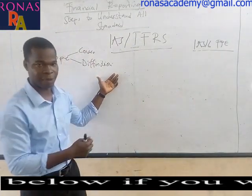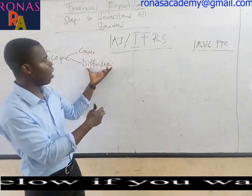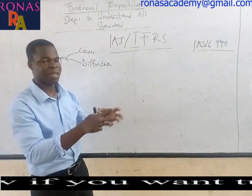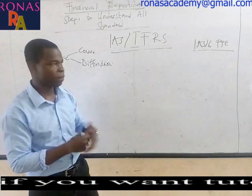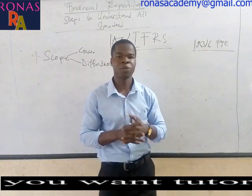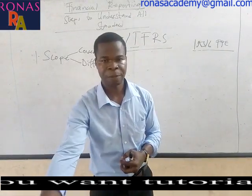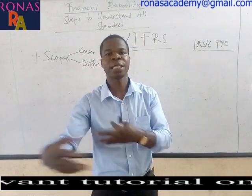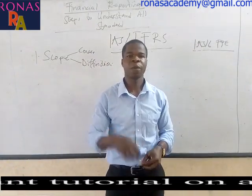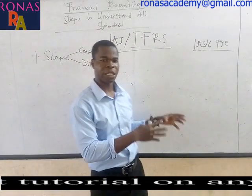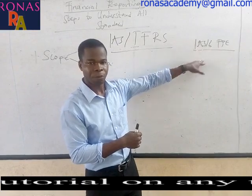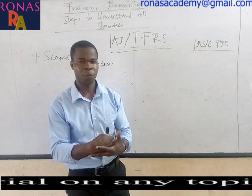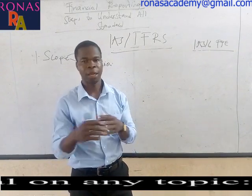Once you've established what items the standard covers, look at how the standard defines those items. For example, IAS 16 PPE defines it as tangible non-current assets used in the production of goods and services, for administrative purposes, or for rental to others, and which will be used in the business for more than one accounting period. The scope covers both what is included and the definition of key terms.